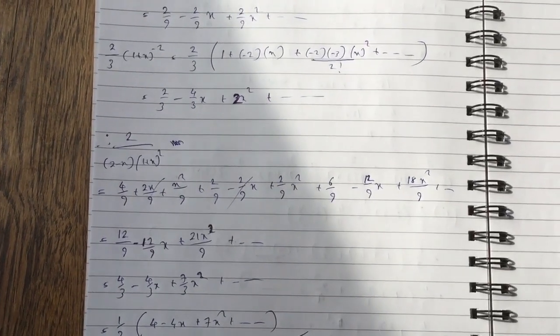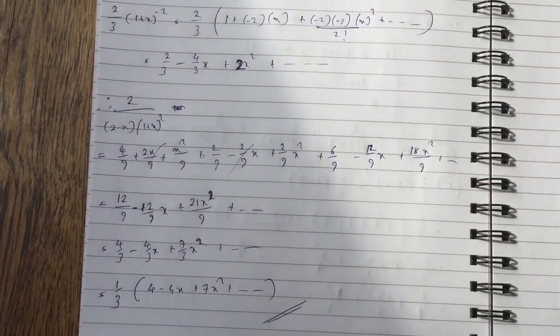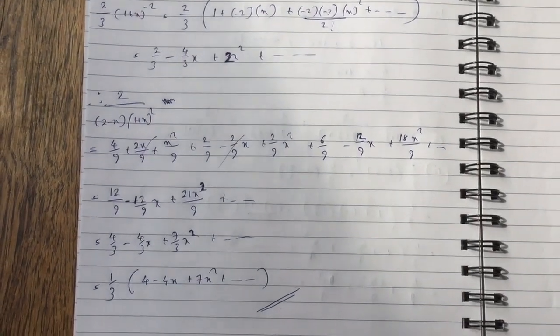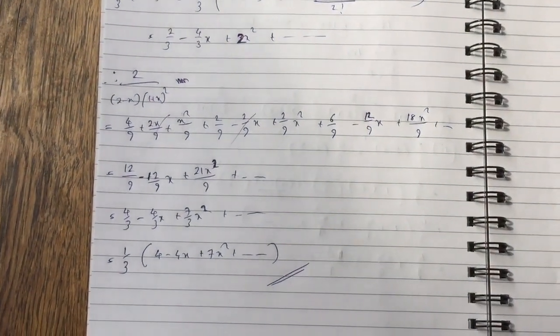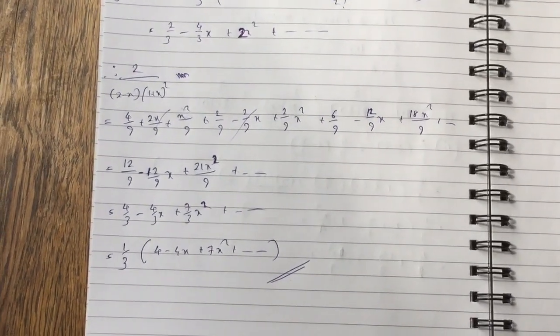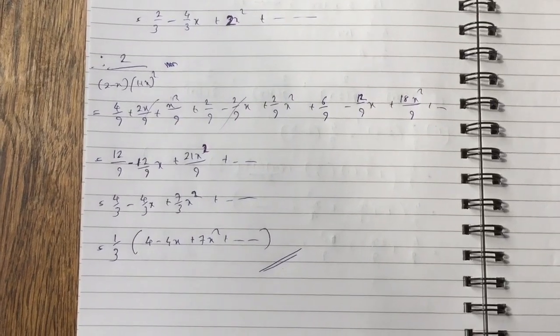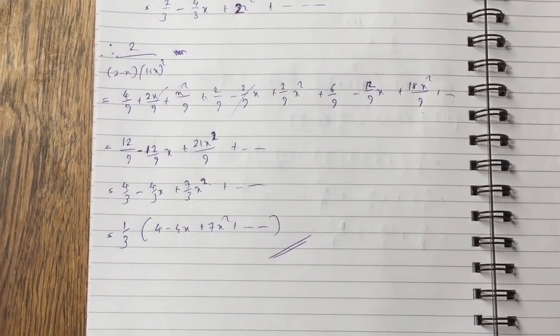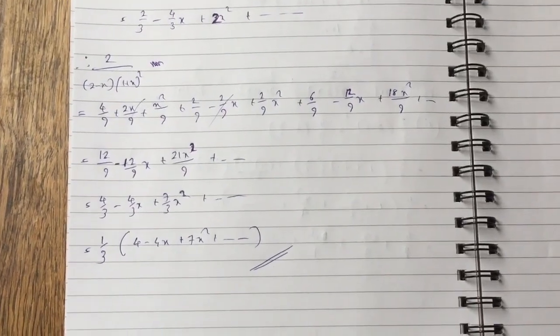The entire fraction equals to the sum of all those expansions. You can see some of these cancel. Your answer is 4 over 3 minus 4 over 3x plus 7 over 3x squared. You can take the third out if you want. So that leaves you with 4 minus 4x plus 7x squared plus dot dot. Those are the solutions, and good luck for tomorrow. Thank you.